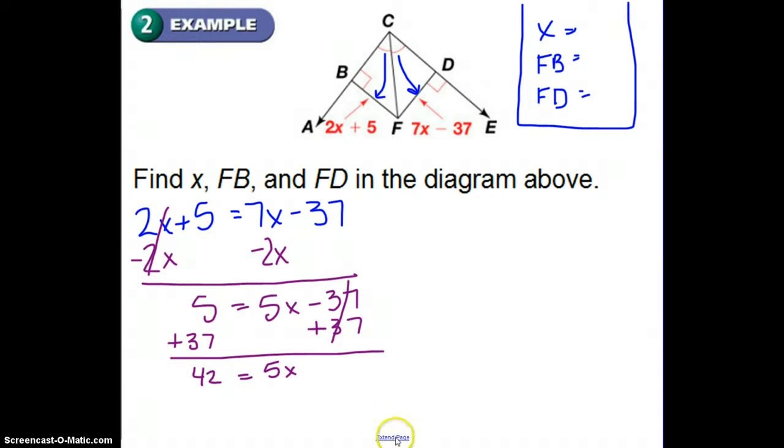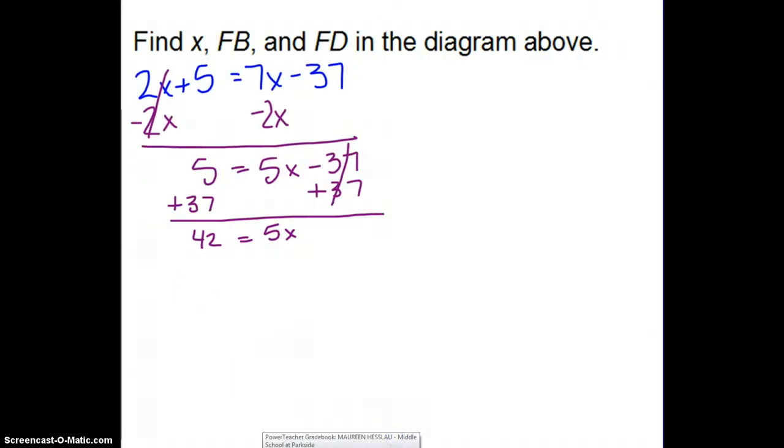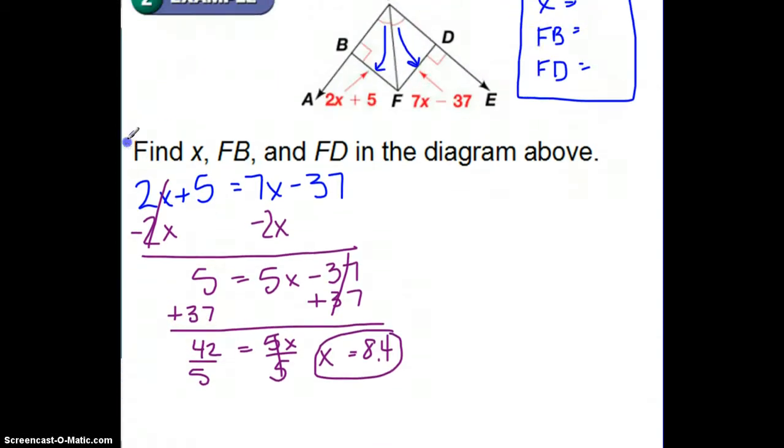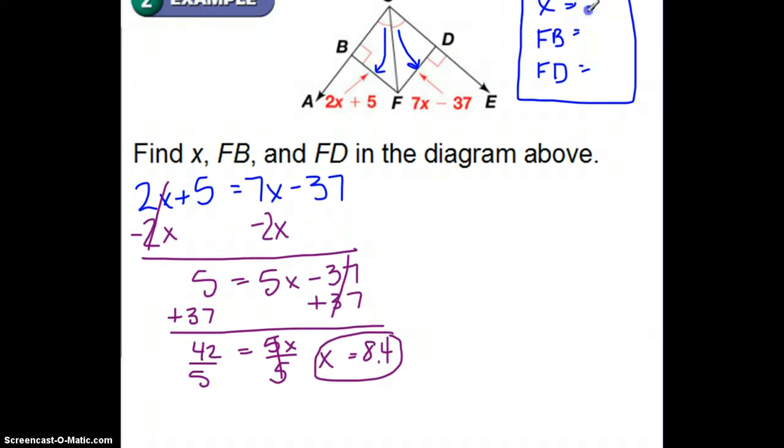So if I divide both sides by 5, I'm going to get X equals 8.4. So this is the first part here. I'm going to go back up here and put 8.4 in there.